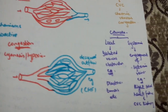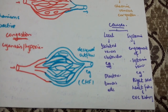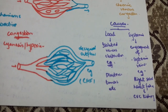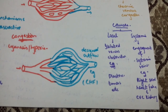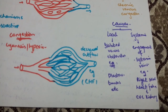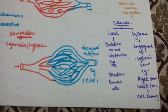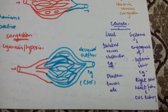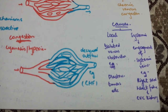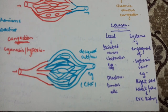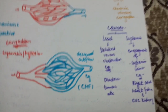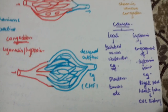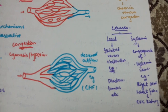Causes of congestion can be local or systemic. Local causes include isolated venous obstruction such as tumors, tight bandages, or thrombosis. Systemic causes include engorgement of systemic veins, for example in right-sided heart failure, leading to chronic venous congestion of the kidney, liver, and spleen.